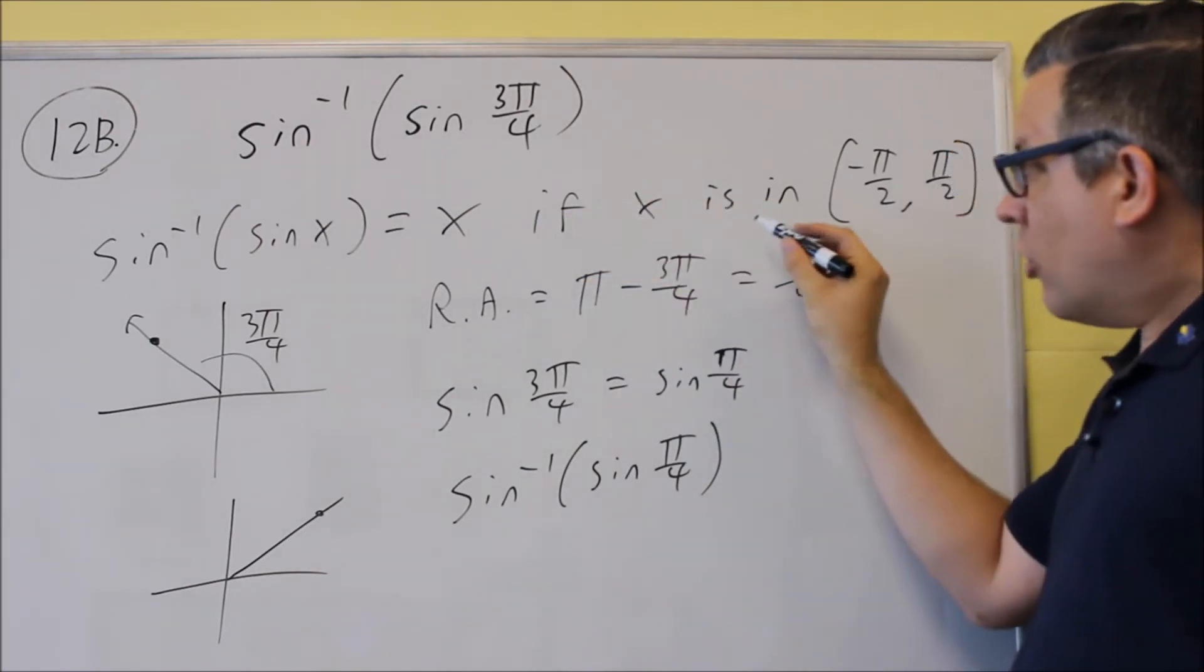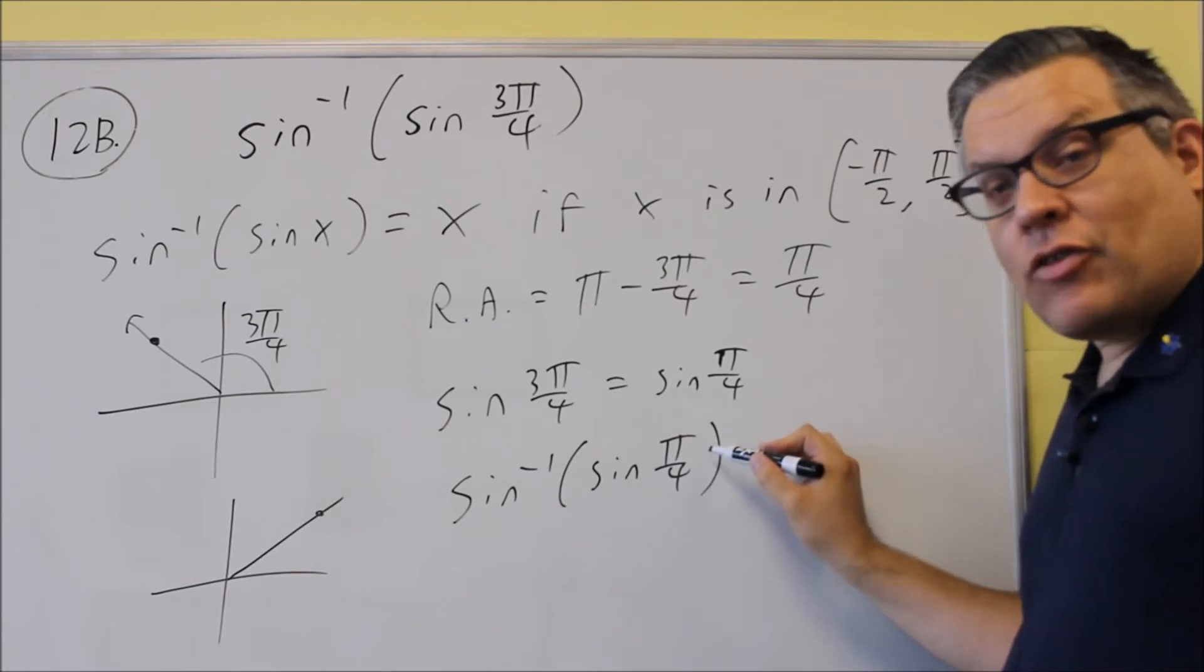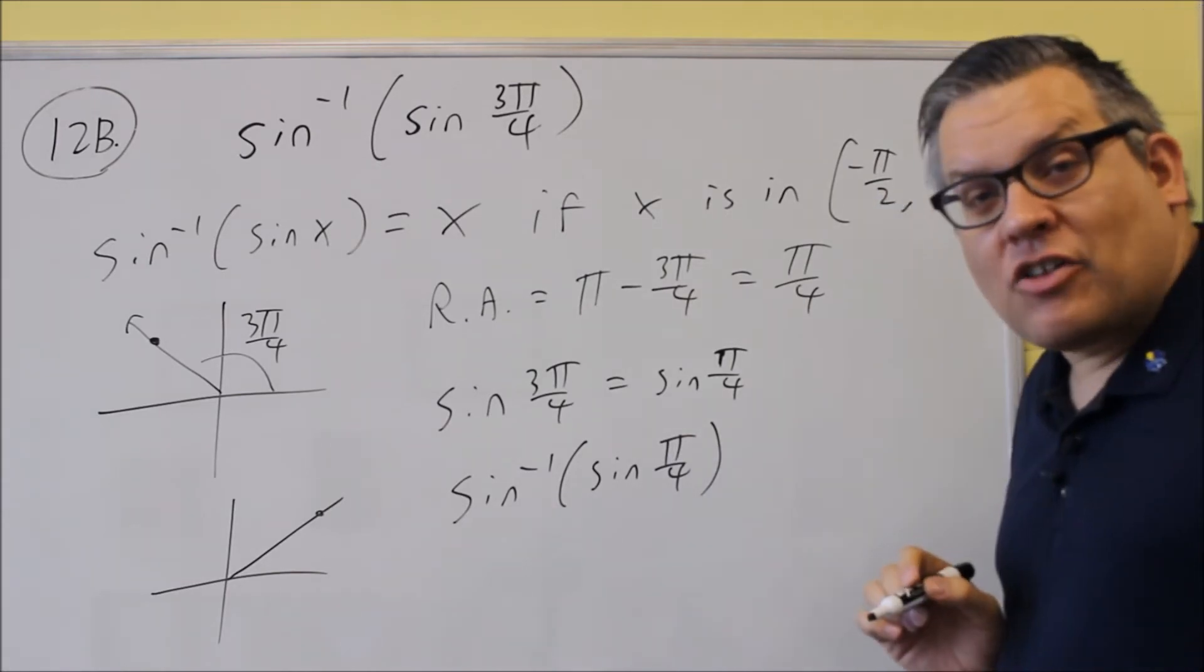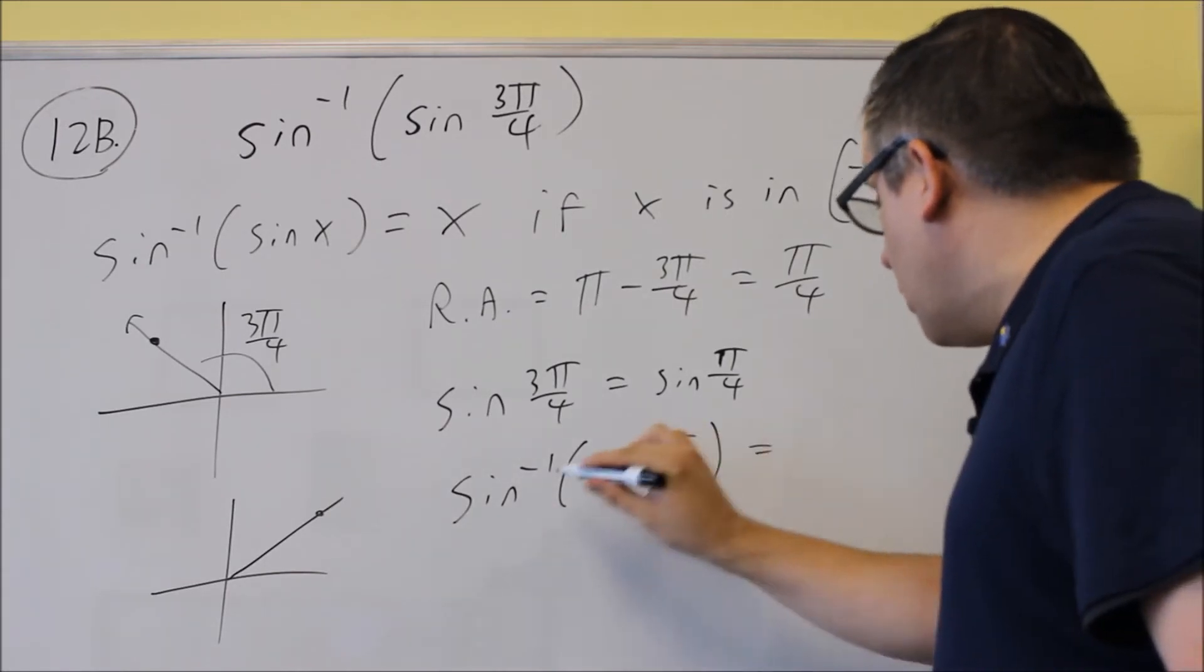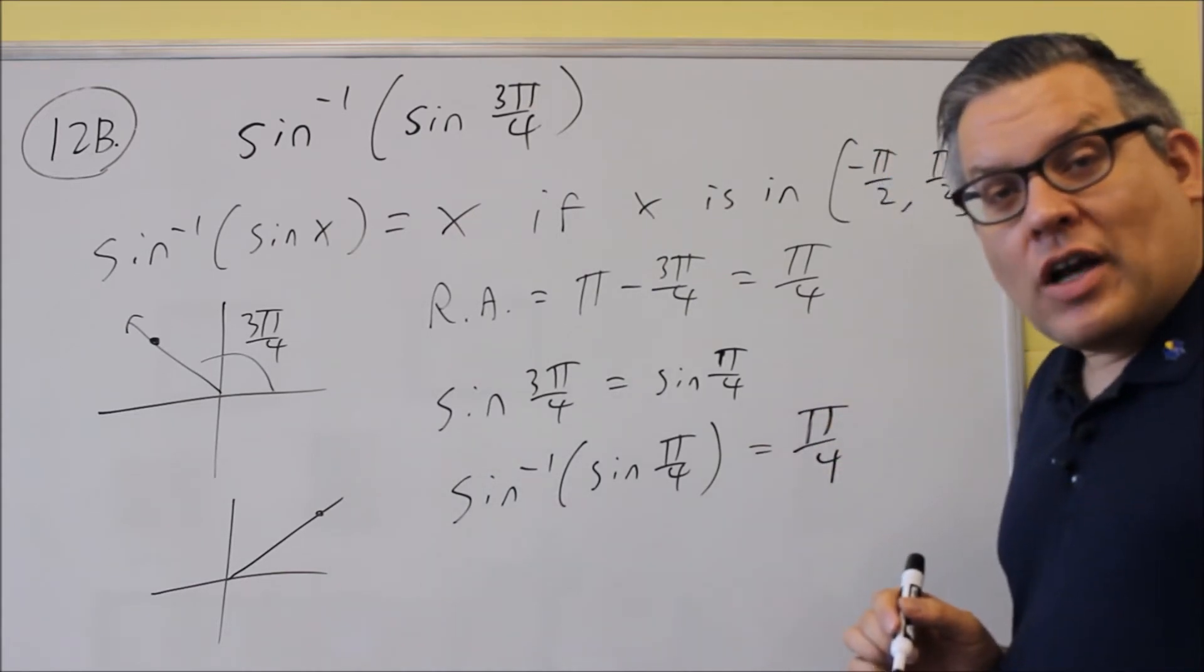And the way this rule works is now we know that the value here, π over 4, would be in between negative π over 2 and π over 2, and then we would know those would cancel out and you would get π over 4 as the answer.